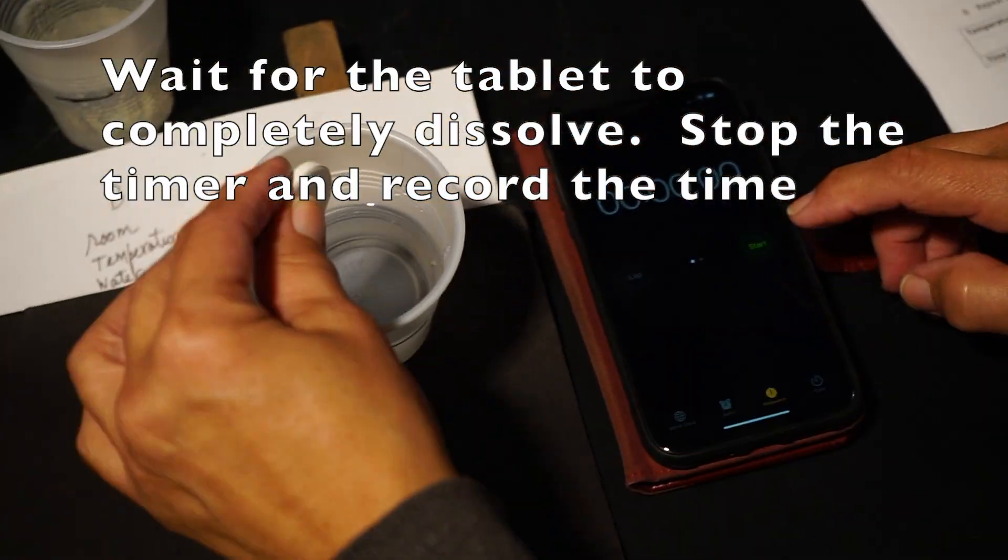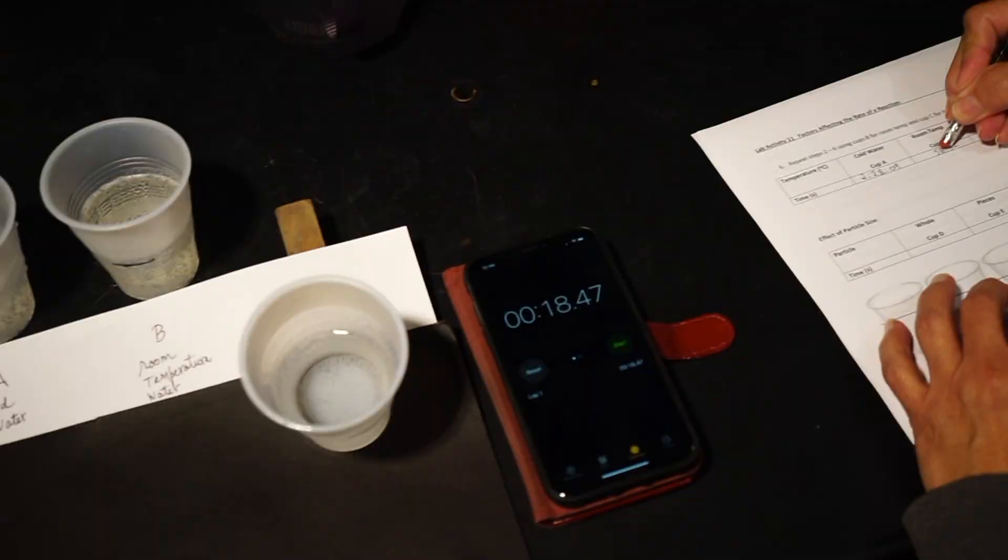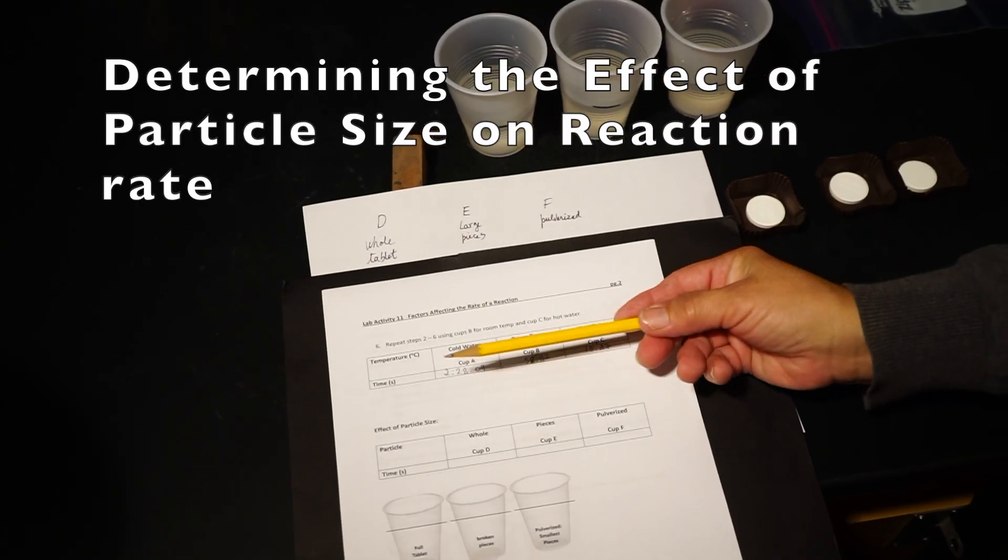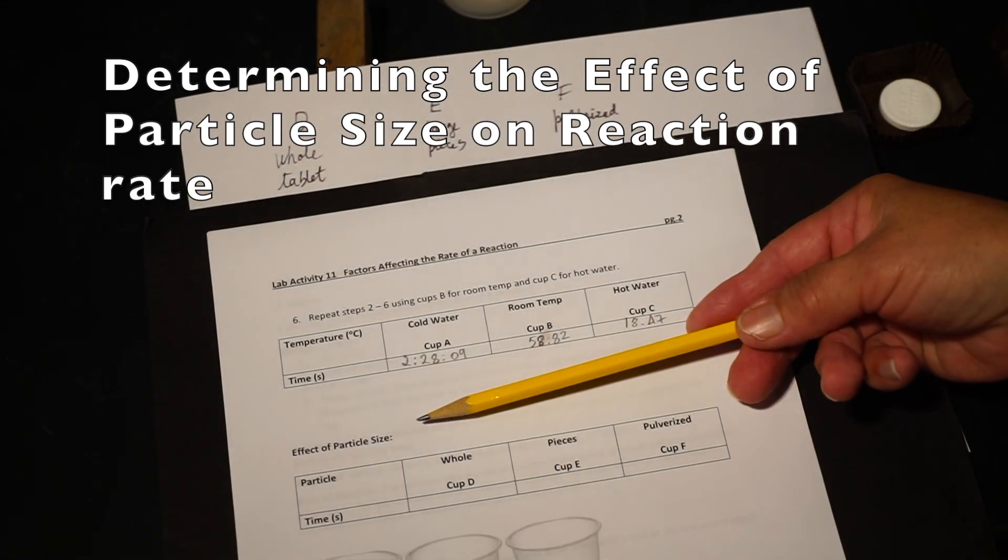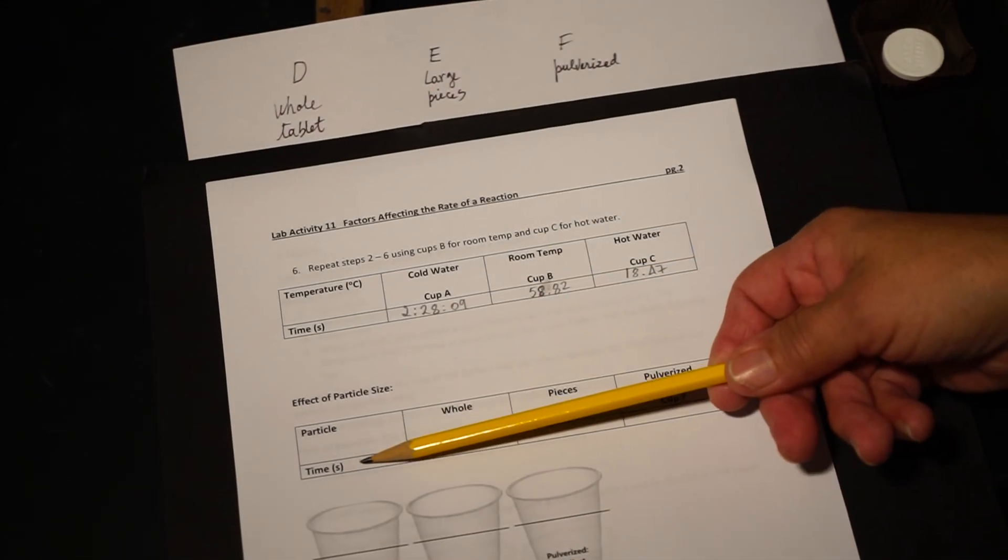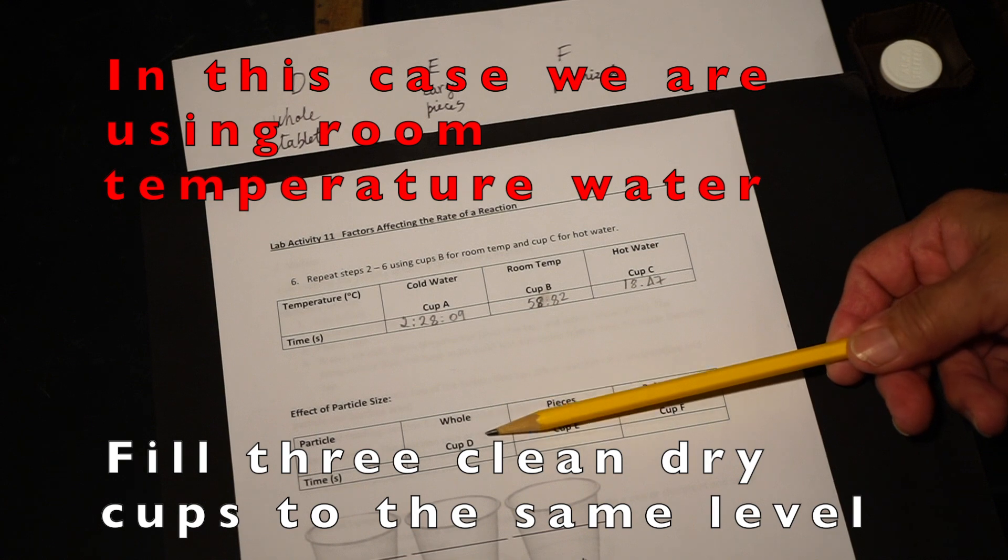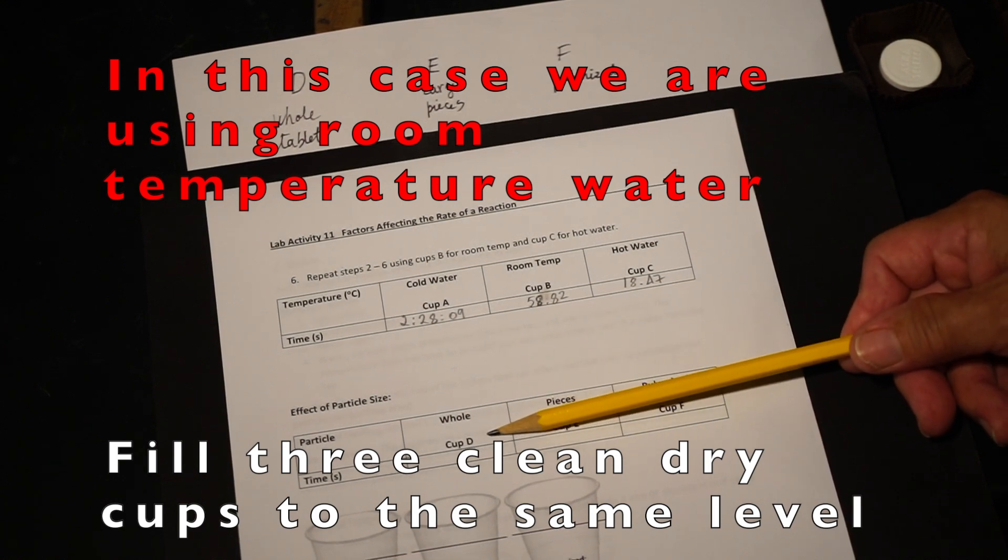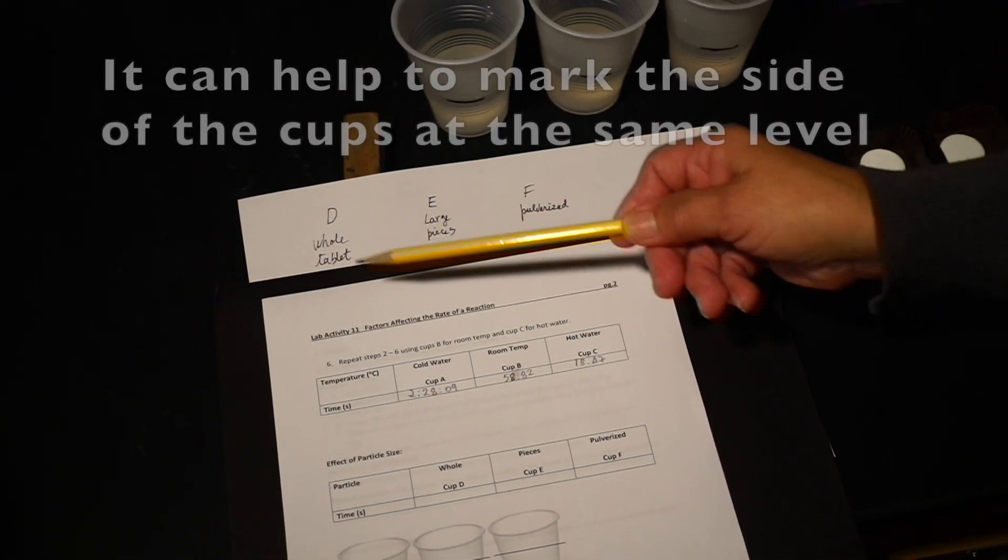Record the time it took. Determining the effect of particle size on reaction rate: with room temperature water, fill three clean dry cups to the same level with water. It can help to mark a line on the side of all three cups to the same level.